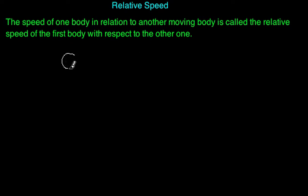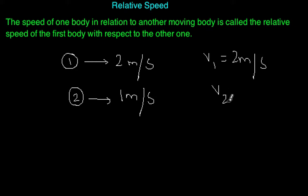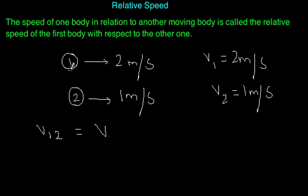Suppose there is a ball moving at a speed of 2 meters per second in one direction, and another ball moving at 1 meter per second in the same direction. This is ball 1 and this is ball 2. The speed of ball 1 is 2 m/s and ball 2 is 1 m/s. To find the speed of ball 1 with respect to ball 2, v12, we subtract: v12 = v1 minus v2 = 1 meter per second. Note that this is true because they are moving in the same direction.